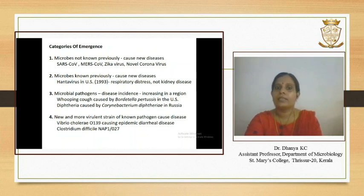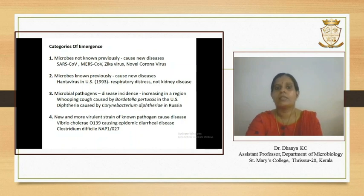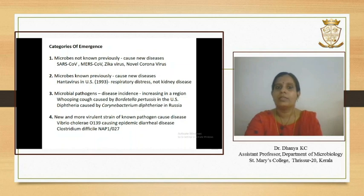Category 3 includes microbes known to cause disease previously, but where the incidence is currently increasing in a region. Examples include whooping cough caused by Bordetella pertussis in the U.S. and diphtheria in Russia.